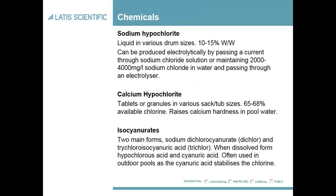So what do we use as our chlorine donors to disinfect the pool? One of the main products is sodium hypochlorite, particularly in areas where you have a higher hardness of water. It usually comes in liquid form at around 15% weight-to-weight. You can also generate chlorine electrolytically by passing a current through a sodium chloride solution, maintaining a level of 2,000 to 4,000 milligrams of sodium chloride.